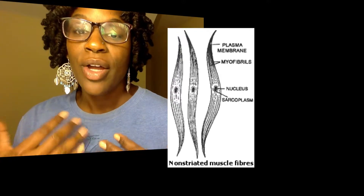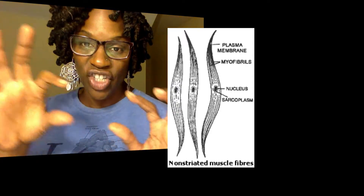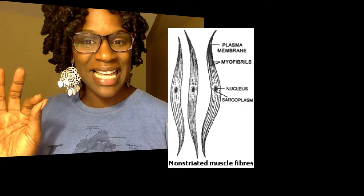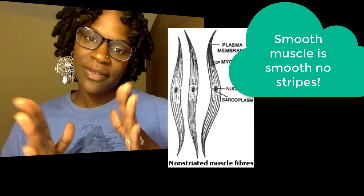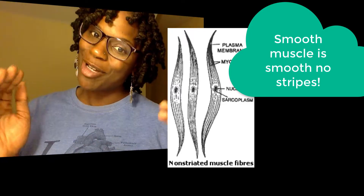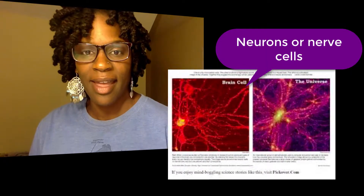Smooth muscle, for example, is shaped like a little S with spindles at the end, and that helps give a smooth motion like peristalsis — you know, the motion that helps with digestion.